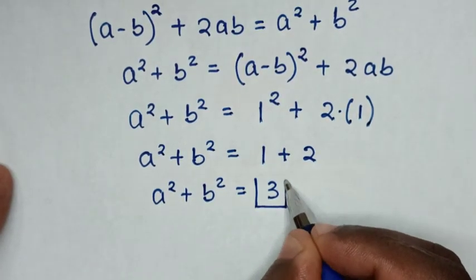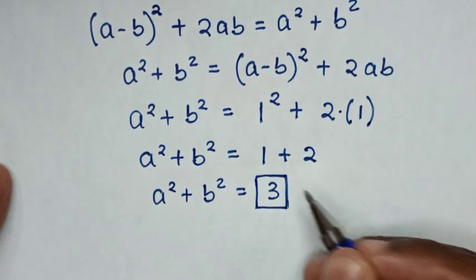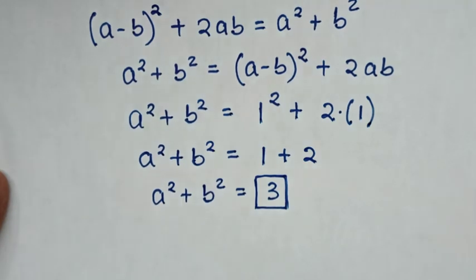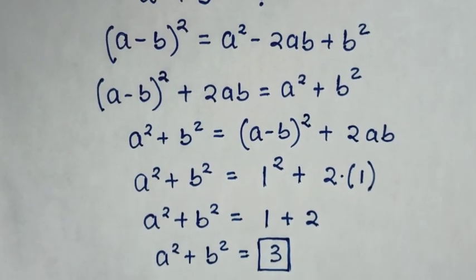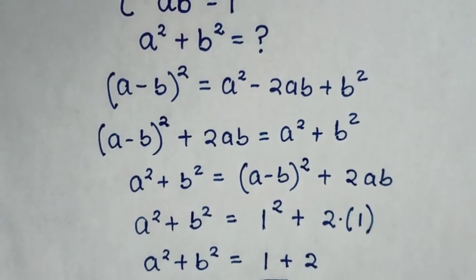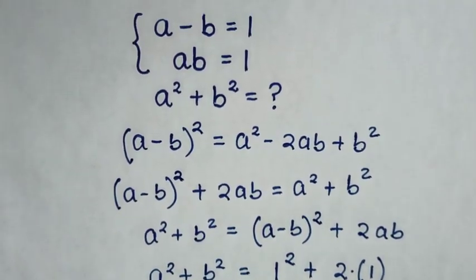Therefore, 3 is the correct answer for the value of A square plus B square. Thank you for watching. Don't forget to subscribe to my channel and see you in the next video. Bye-bye.